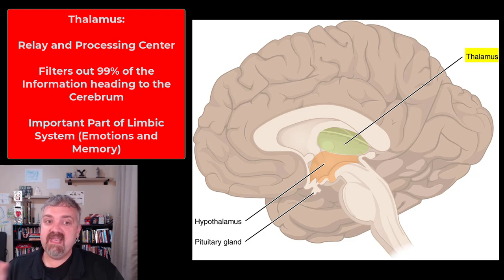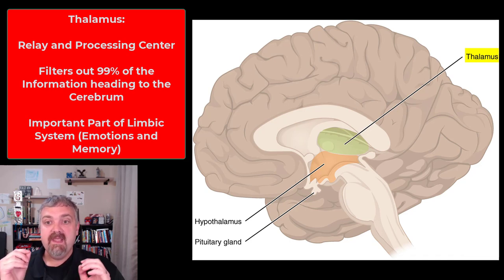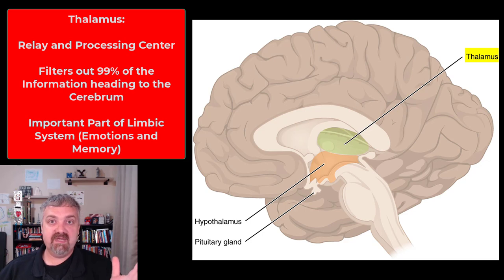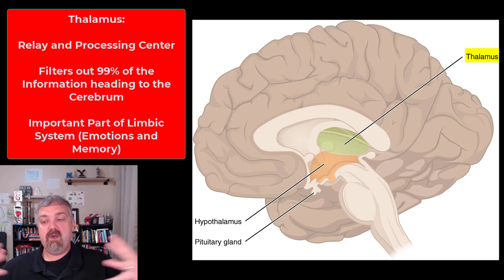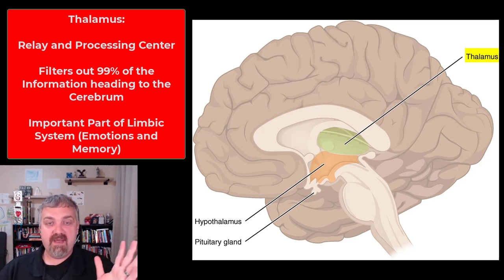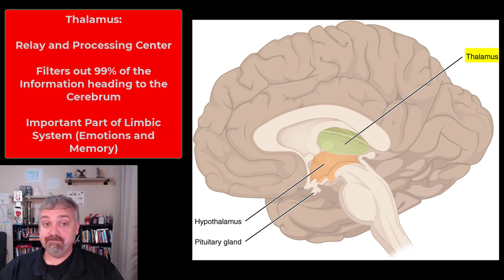Let's talk about the thalamus. The first thing I think of is that it's a relay center — it relays and processes information — but its primary job is to filter information heading up to the cerebrum. Imagine it as a gatekeeper: about 99% of what you're being stimulated by right now is being filtered out by the thalamus. It determines what's the 1% that it should bother the cerebrum with. So the thalamus is a filter — that's its primary function.